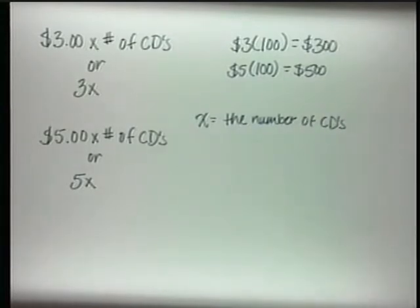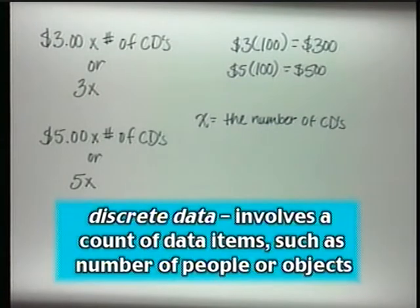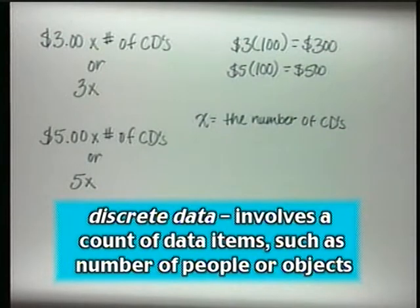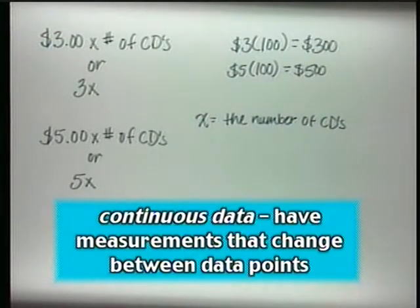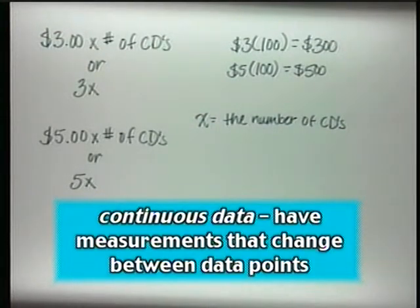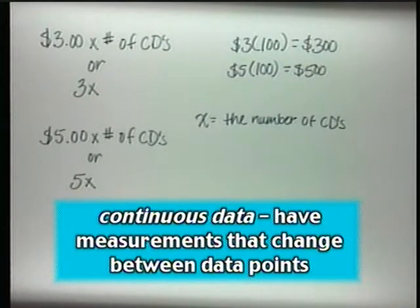Since we are counting objects, that type of information is called discrete data. Discrete data involves a count of data items, such as number of people or objects. Whereas continuous data involves measurements. Continuous data has measurements that change between data points, such as temperature, length, and weight.